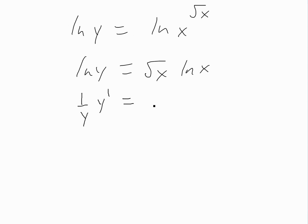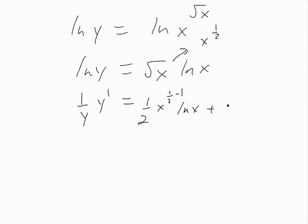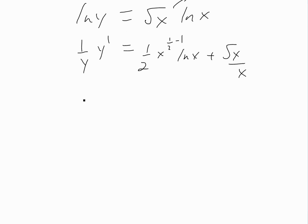On the left side, the derivative of ln y gives 1 over y times y prime. On the right side, we use the product rule. Root x is x to the 1/2, so its derivative using the general power rule is 1/2 times x to the 1/2 minus 1, which is x to the negative 1/2. So we get: (1/2) times x to the negative 1/2 times ln x, plus root x times 1 over x.